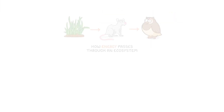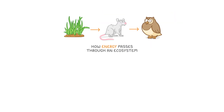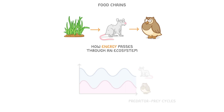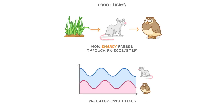In today's video we're going to see how energy passes through an ecosystem, which we can do using food chains. And then at the end we'll take a look at predator-prey cycles.